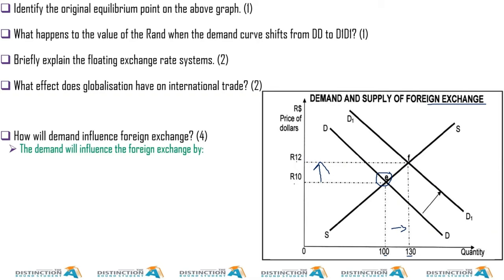The dollar has appreciated and the rand has depreciated, due to an increase in demand for foreign currency. This could be as a result of many things, but one of them could be that we are importing more than we're exporting. The original equilibrium point would be point E.